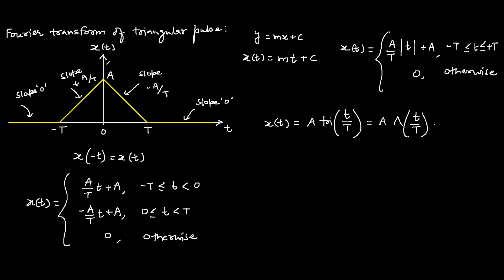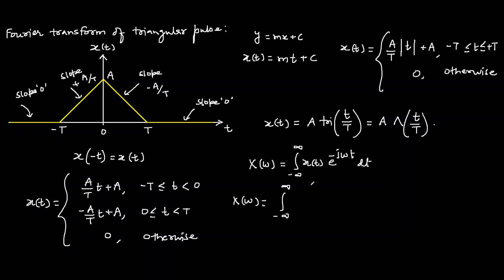Now we find the Fourier transform of this triangular pulse. We know that X(ω) is the integration of x(t) · e^(−jωt) from minus infinity to plus infinity. Substituting x(t) = A · tri(t/T), we get the integral of A · tri(t/T) · e^(−jωt) dt.